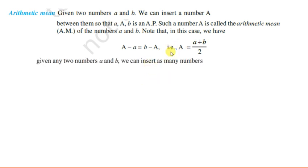This is one arithmetic mean which is inserted between the two numbers. But given two numbers, we can insert as many numbers between them as we wish so that the resulting sequence is an AP. Now let us see how we do this.